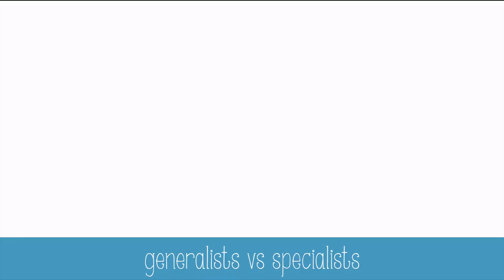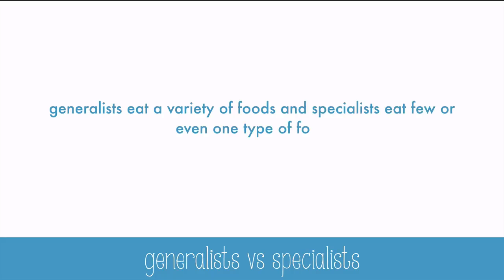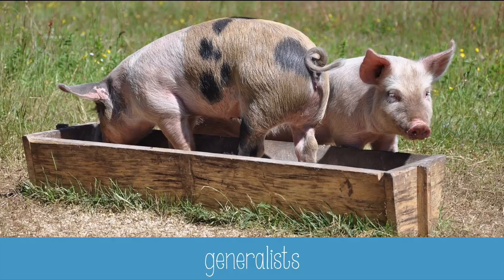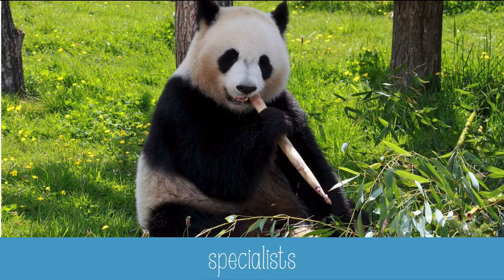Some organisms fill a very broad niche and some a very specific one. Generalists eat a variety of foods and specialists eat few or even just one type of food. Pigs are an example of a generalist — they'll eat lots of different foods very happily. This can be beneficial because they could survive on a variety of foods and fill a niche in many different habitats. The panda, on the other hand, is a specialist because they only eat bamboo. If bamboo is unavailable, the panda population may die off. This species has a much higher risk of becoming extinct, so it's often beneficial for organisms to be generalists.